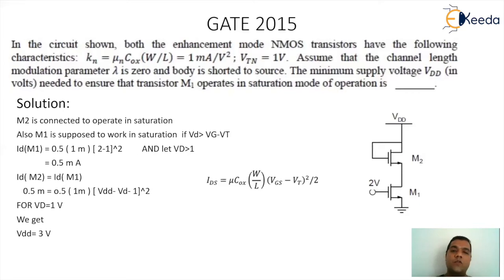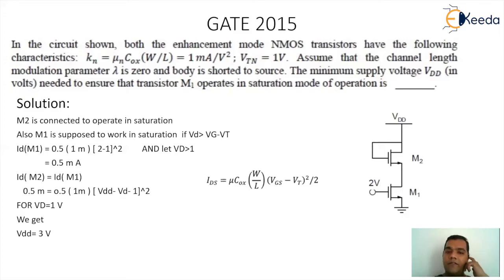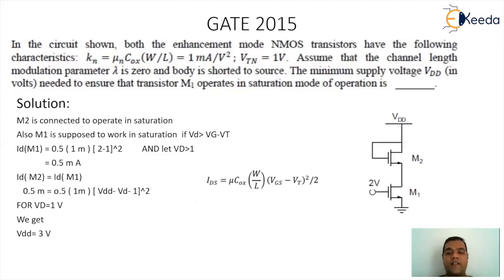Using the saturation equation for MOSFET 1: ID = 0.5 × 1mA × (2 − 1)² = 0.5 mA. Since both MOSFETs are in series, they carry the same drain current. The saturation condition for MOSFET 1 requires VD1 > VG1 − VT = 2 − 1 = 1V. For minimum VDD, we set VD1 = 1V. The drain currents of M1 and M2 being equal gives us the equation to solve for VDD.